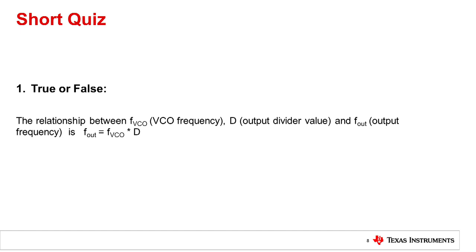True or False: the relationship between FVCO, or the VCO frequency, D, the output divider value, and Fout, the output frequency, is Fout equals FVCO times D. False.